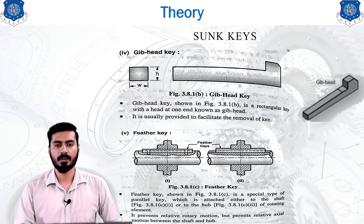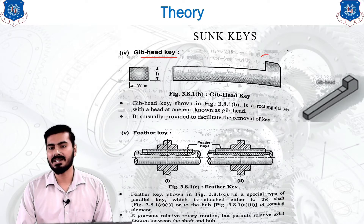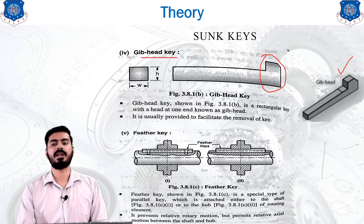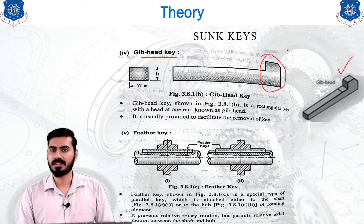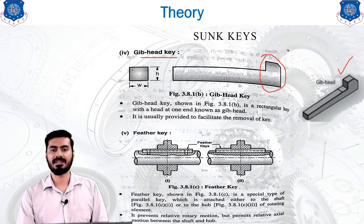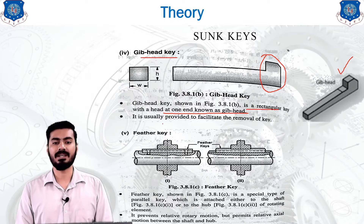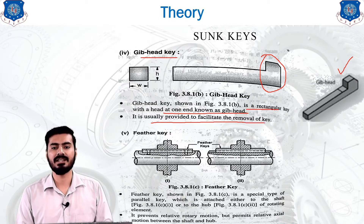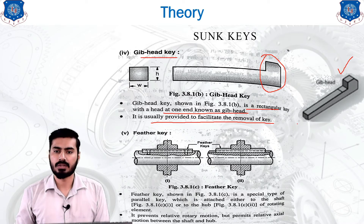Another type of sunk key is the gib head key. This is a modification provided to the key for easy removal and insertion. The key has a head at one end, and in a 3D or isometric view it can be drawn accordingly. The gib head key is a rectangular key with a head at one end; proportions can be found in reference books like RS Kurmi. It is provided to facilitate easy insertion or removal.